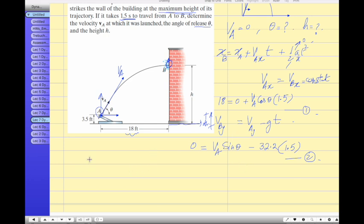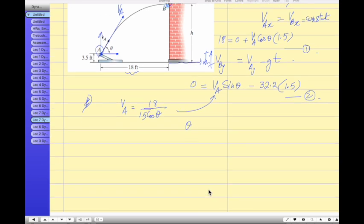So let's form one, equation one, that we can find out Va equals to 18 over cosine theta, 1.5. And you can plug it in over here. And you can find out theta. And we can do it, you can check. If you do the math, you can find out. Let's do it now.